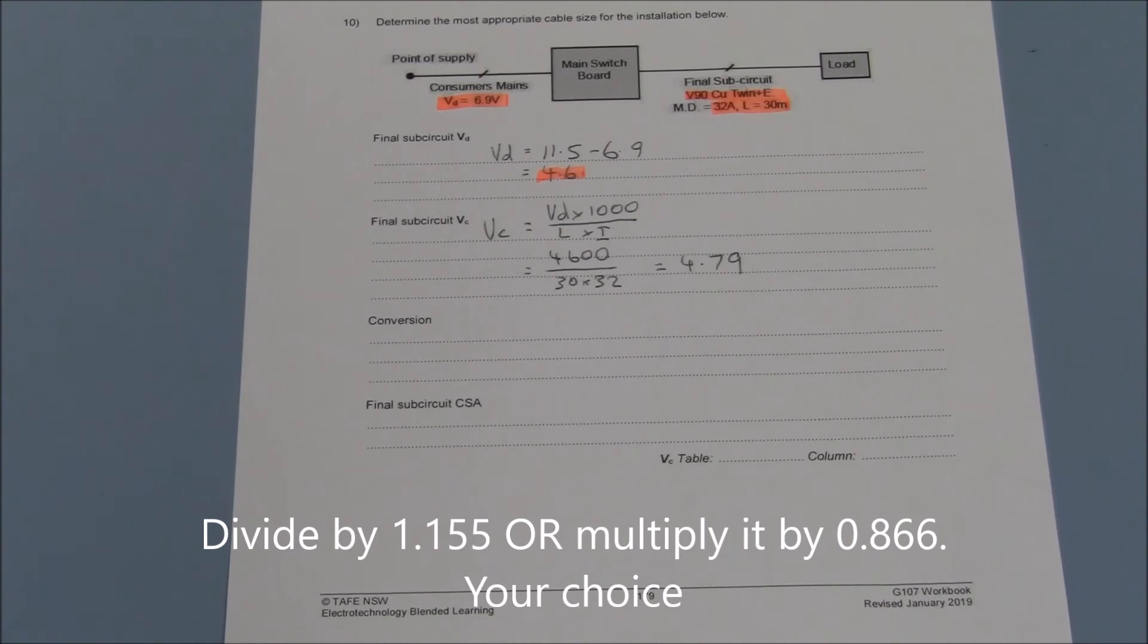We need to do the opposite. Dividing a number by 1.155 is the same as multiplying it by 0.866.